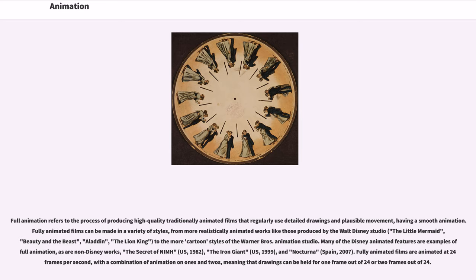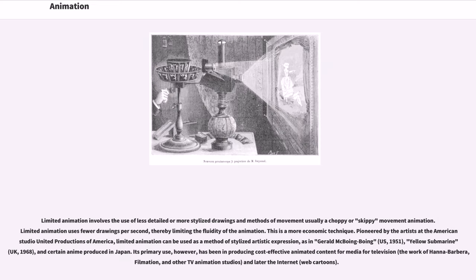Full animation refers to the process of producing high-quality traditionally animated films that regularly use detailed drawings and plausible movement. Fully animated films can be made in a variety of styles, from more realistically animated works like those produced by Walt Disney Studio — The Little Mermaid, Beauty and the Beast, Aladdin, The Lion King — to the more cartoon styles of Warner Bros. Animation Studio. Fully animated films are animated at 24 frames per second, with a combination of animation on ones and twos, meaning drawings can be held for one or two frames out of 24.